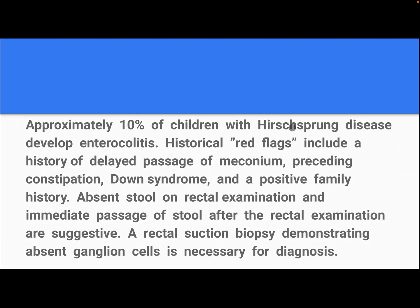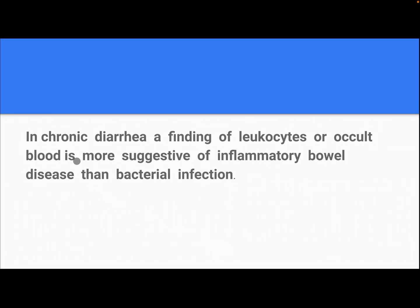Approximately 10 percent of children with Hirschsprung's disease develop enterocolitis. Historical red flags include a history of delayed passage of meconium, preceding constipation, Down syndrome, and a positive family history. Absent stool on rectal examination and immediate passage of stool after the rectal examination are suggestive. A rectal suction biopsy demonstrating absent ganglion cells is necessary for diagnosis.